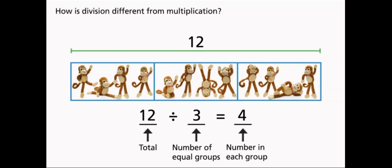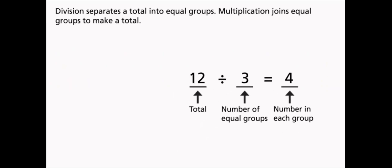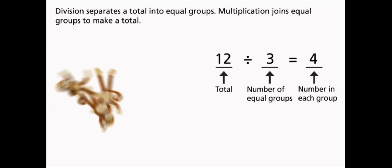How is division different from multiplication? Division separates a total into equal groups. Multiplication joins equal groups to make a total.